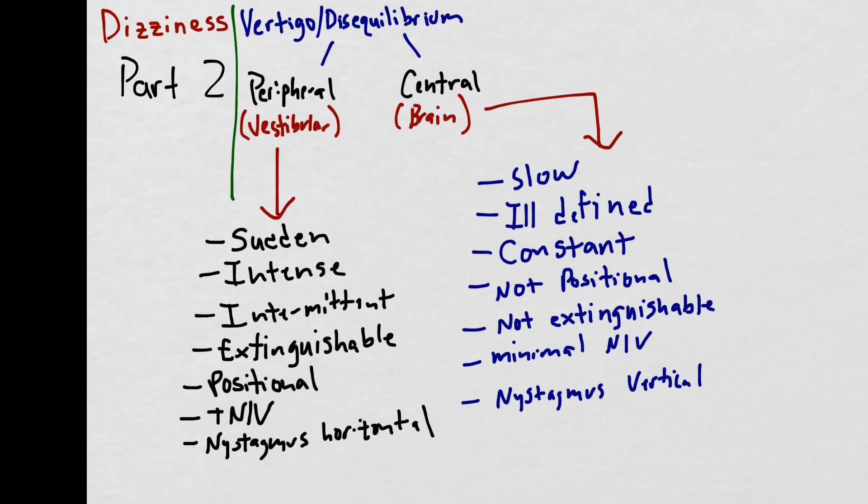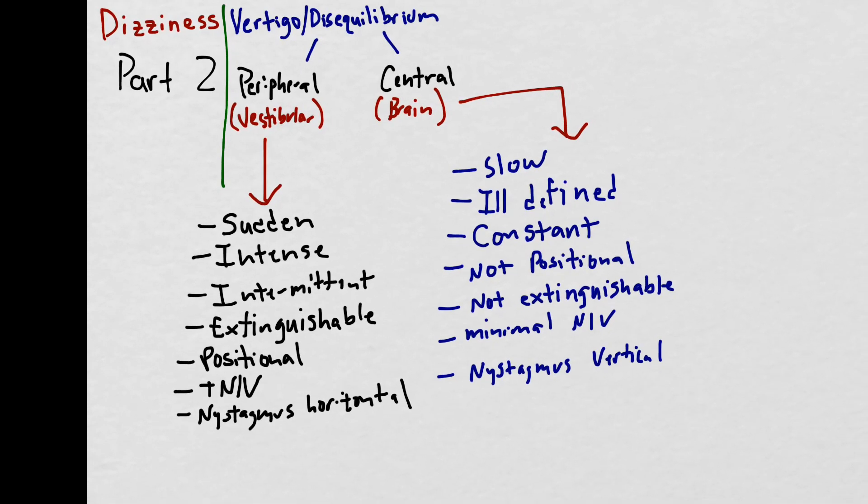And finally the other differentiator between these two is what the neurologic exam shows. In peripheral vertigo you'll have a normal neurologic exam. Whereas in central vertigo you might see some neurologic abnormalities either in the form of cerebellar dysfunction or a cranial nerve defect.